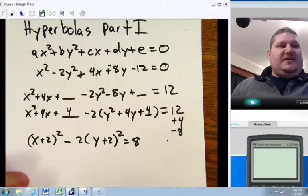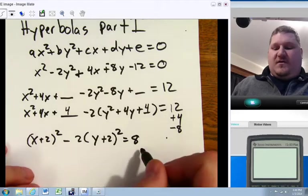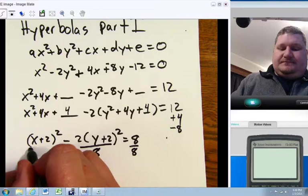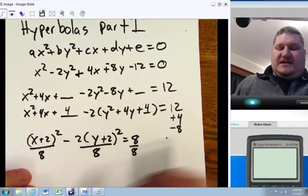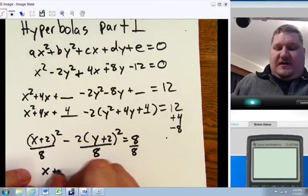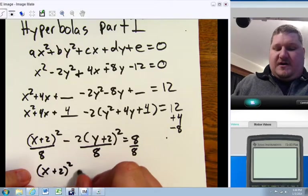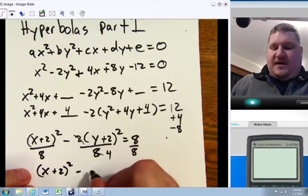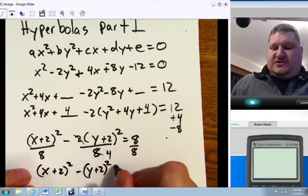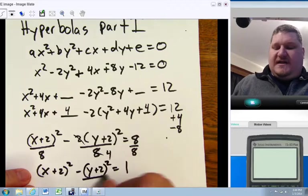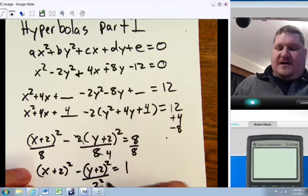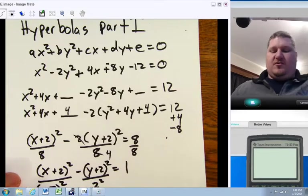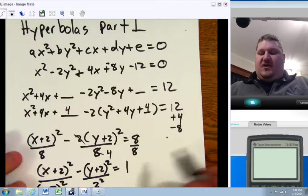To finish putting it in our standardized form, we need to divide both sides by eight. And so I come up with X plus two, the quantity squared, minus. Now, two and eight reduce to make four in the bottom. Y plus two, the quantity squared, equals one. In the bottom, four is two squared. And here we have two root two squared, or square root of eight. That's our general form.